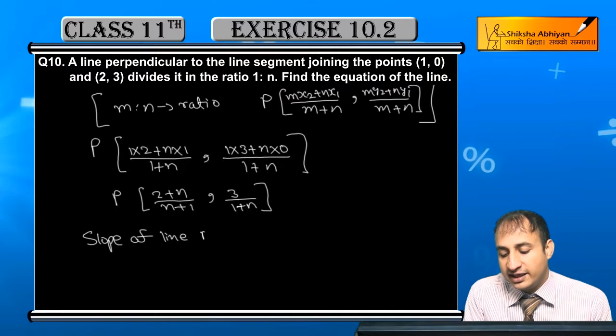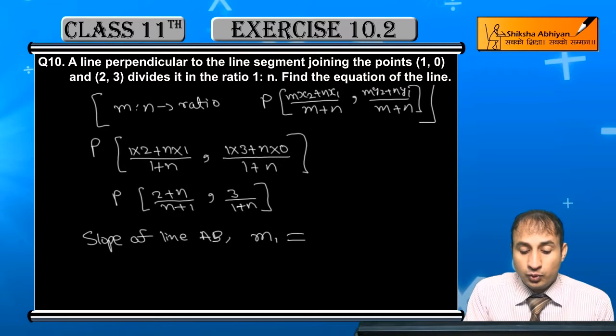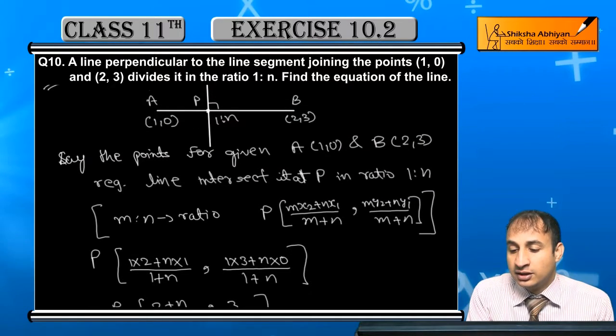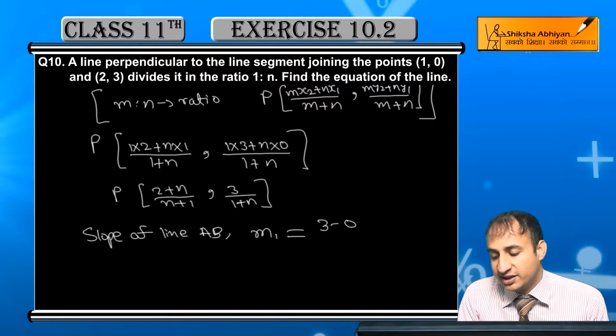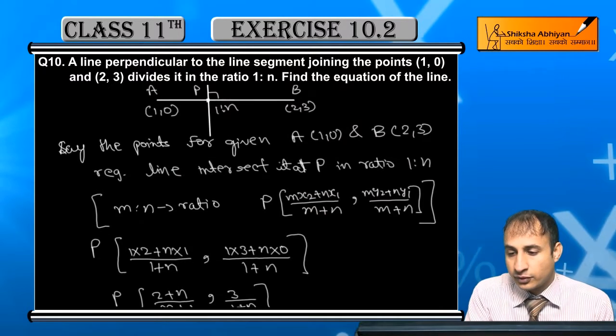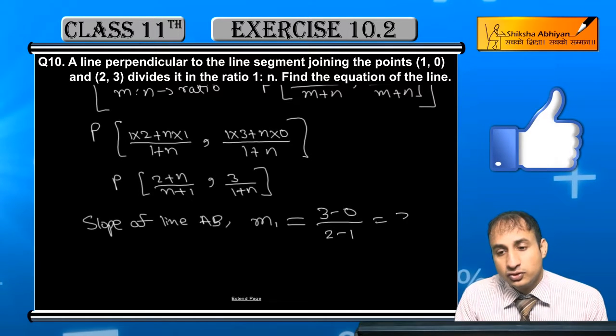Now slope of line AB, which I call M1. The two points are (1,0) and (2,3). So slope will be (3-0)/(2-1) = 3/1 = 3.